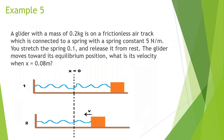A glider with a mass of 0.2 kilograms is on a frictionless air track connected to a spring with a spring constant of 5 newtons per meter. You stretch the spring 0.1 meters and release it from rest. The glider moves toward its equilibrium position. What is its velocity when it is 0.08 meters from equilibrium?